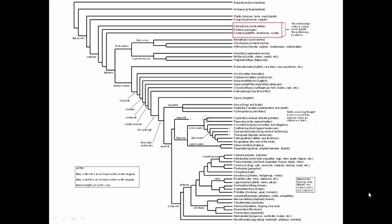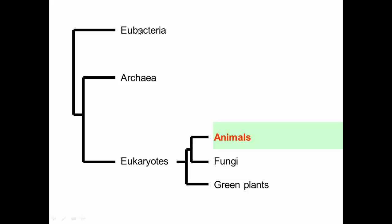Continuing our look at our phylogeny, we're going to look at this part of the tree. As a reminder, we looked at eubacteria, which is the outgroup of archibacteria and eukaryotes, and then archibacteria were the outgroup compared to eukaryotes. Within eukaryotes, we see green plants as basal to animals and fungi, and then animals and fungi as sister taxa. We've already talked about fungi and green plants, so now let's look at animals.